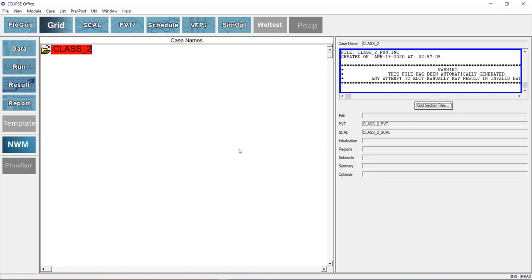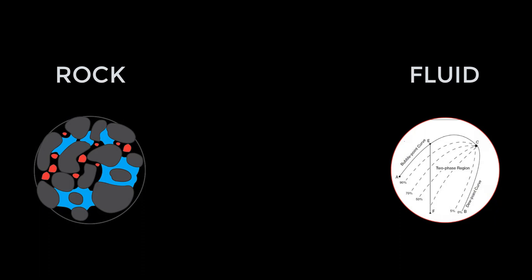Now in the last lesson, which is lesson four actually, we were able to add a field model to the simulation. So what this simply means is that we have a reservoir rock which is represented by the grid data we imported from Petrel. Then we have reservoir fluids, that is, fluids occupying the pores of the reservoir rock. And this is represented by the PVT data that we added to the simulation as well.